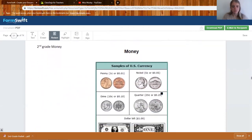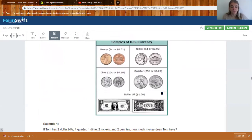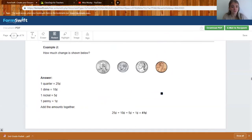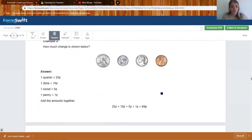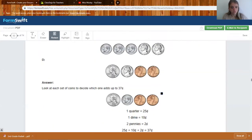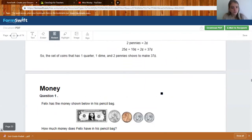On to money. A penny is one cent, a nickel is five, a dime is 10 and a quarter is 25. But you guys know this already. These are just some examples of what is shown.